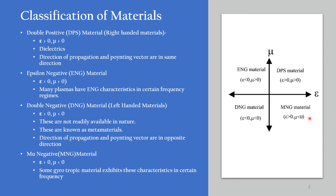Next one is MNG, or mu negative material. For this, permeability will be negative and permittivity will be positive. Some gyrotropic materials exhibit these characteristics in certain frequency ranges.